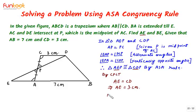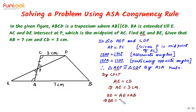We also have to find the value of BE. From the figure, BE equals AE plus AB. So BE equals 3 centimeters plus 7 centimeters, which equals 10 centimeters.